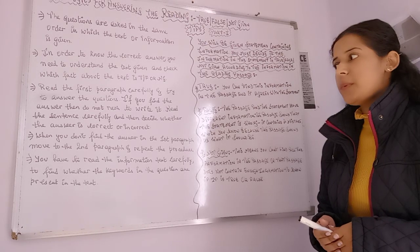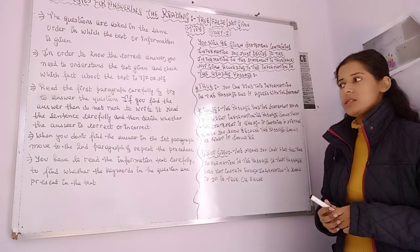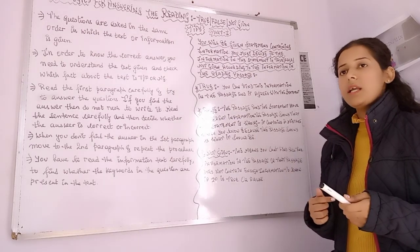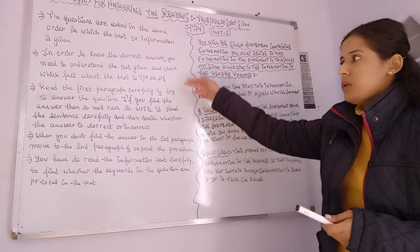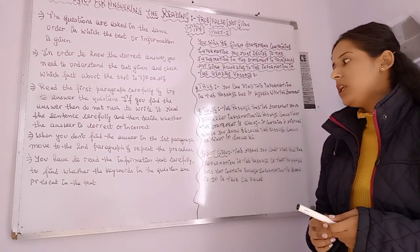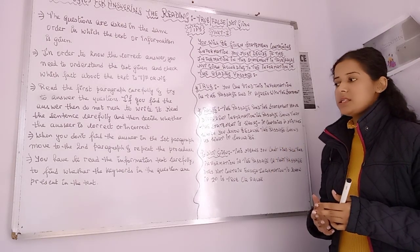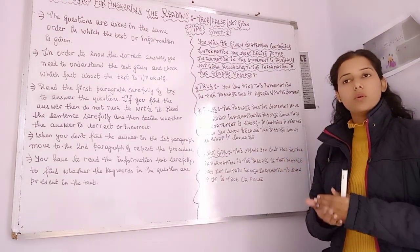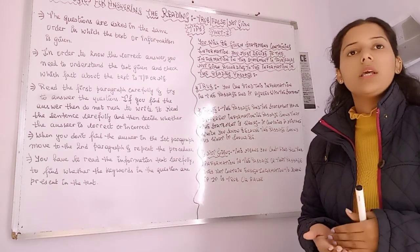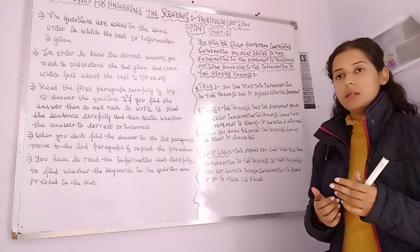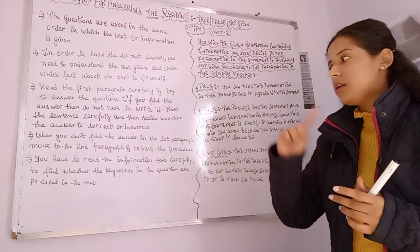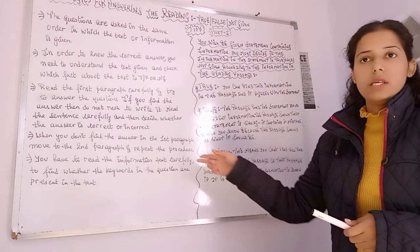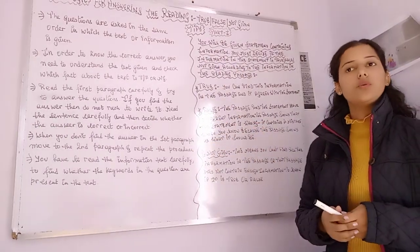The fourth strategy: when you do not find the answer in the first paragraph, move to the second paragraph and repeat the procedure. Follow the three steps shown in the table: read the information text carefully to find whether the keywords in the questions are present. If you are not finding the relevant content, re-read your statement and then find the correct passage. These are the tips and techniques to follow for part one of True, False, Not Given.